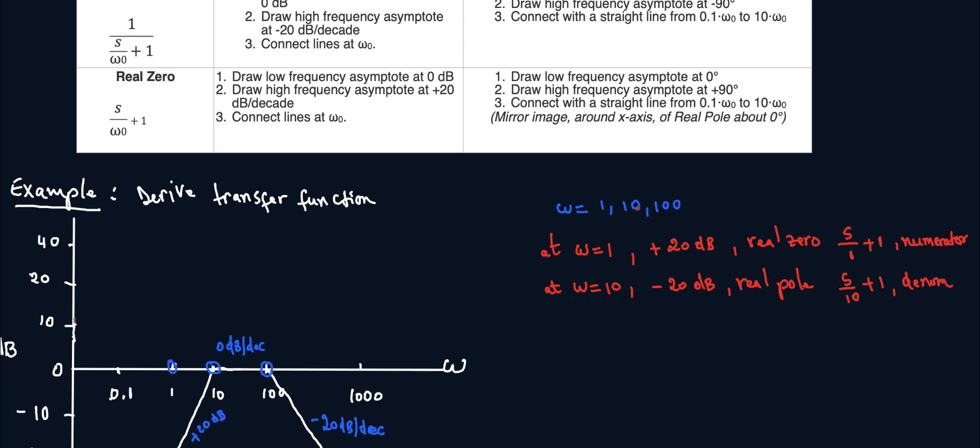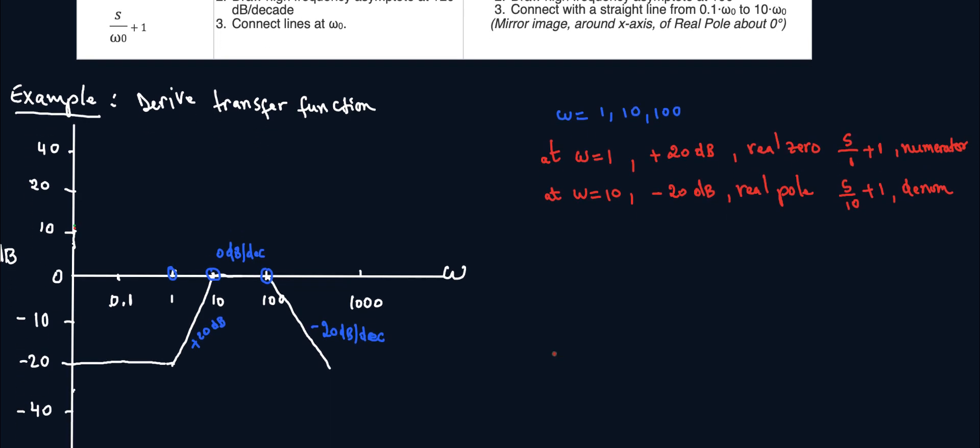And so I've done my 1, I've done my 10, and now the last one is 100. So what happens at 100? At omega equals 100, I'm going from a zero slope to a minus 20 slope. So what is the change? Again, you're not looking at the actual slope, you're looking at the change in slope. So here the change in slope is minus 20 because you're going from a plus 20 to a zero. So that's why at 10 we had a minus 20 dB. But here at 100 we're going from a zero dB to a minus 20 dB. So I have a minus 20 dB, a change of minus 20 dB, which means again I have a real pole, which means I do have S over 100 plus 1 at the denominator.